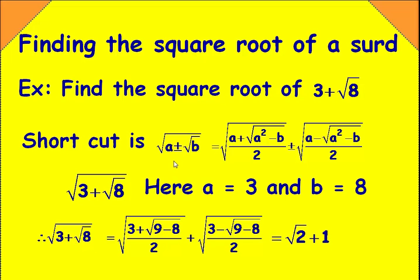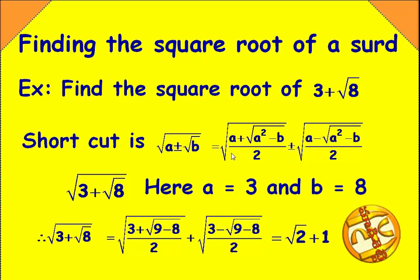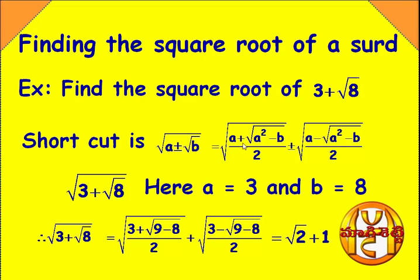So, this is the shortcut to find the square root of an expression of the form (a ± √b): square root of (a ± √b) equals square root of ((a + √(a² - b)) / 2) plus or minus square root of ((a - √(a² - b)) / 2).